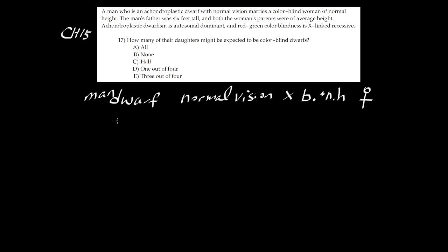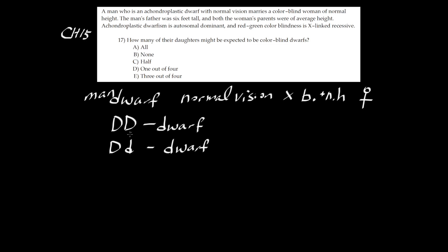Dwarfism is autosomal — not sex-linked. If you have any dominant gene D, so DD or even heterozygous Dd, you're a dwarf because it's dominant. Red-green color blindness is X-linked recessive.